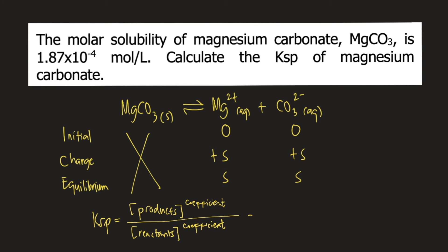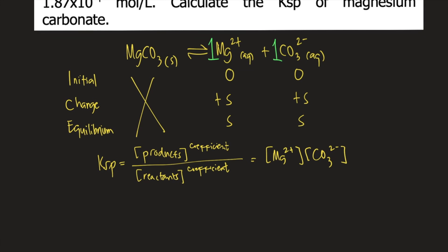In our problem, our products are Mg2+ and carbonate anion, and their coefficients are both 1. So products, we have Mg2+ and then carbonate, CO3 2-. We do not need to include our reactant because our reactant is solid. So Ksp is just equal to Mg2+ times carbonate.